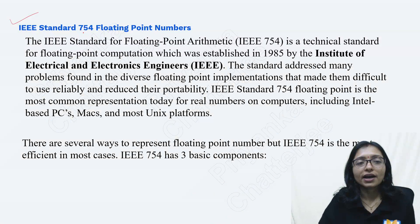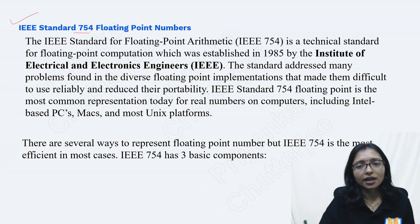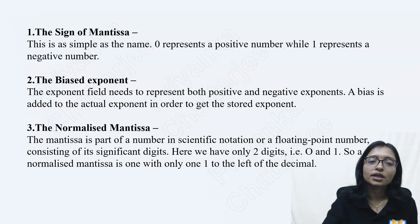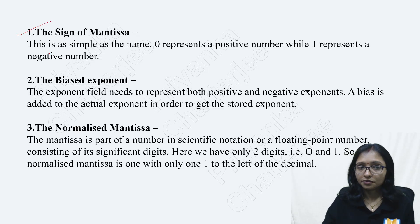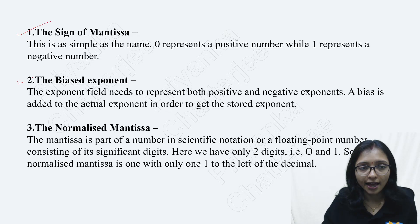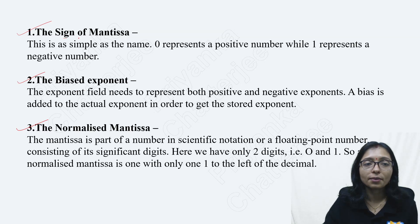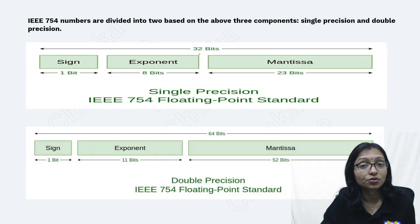Here 754 floating point representation is one type of representation for how we represent floating point. There are three parts: one is called mantissa, another is biased exponent, and another is sign of the mantissa. These are the three parts you have to remember.